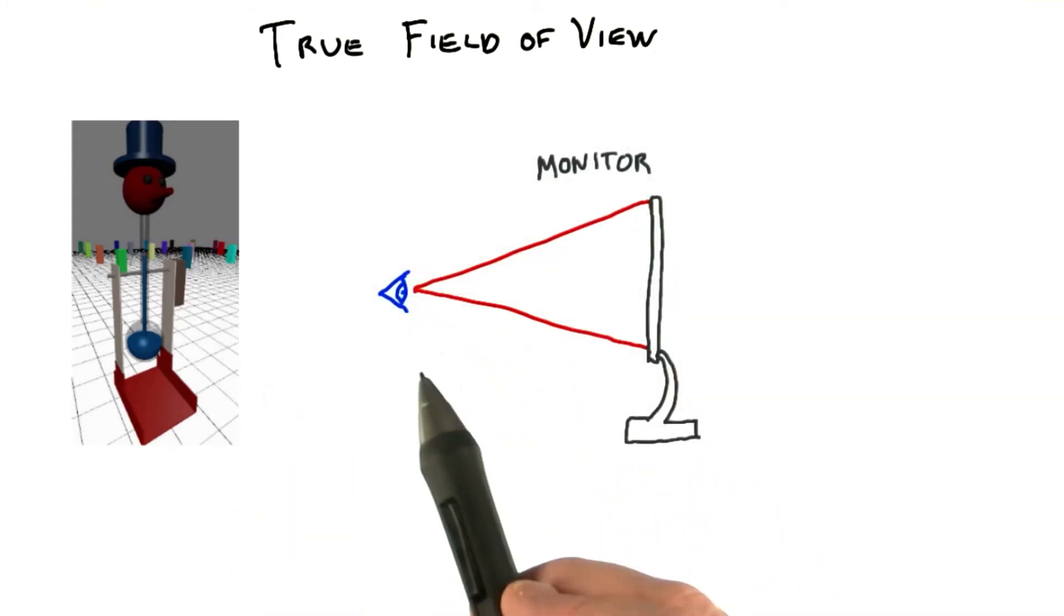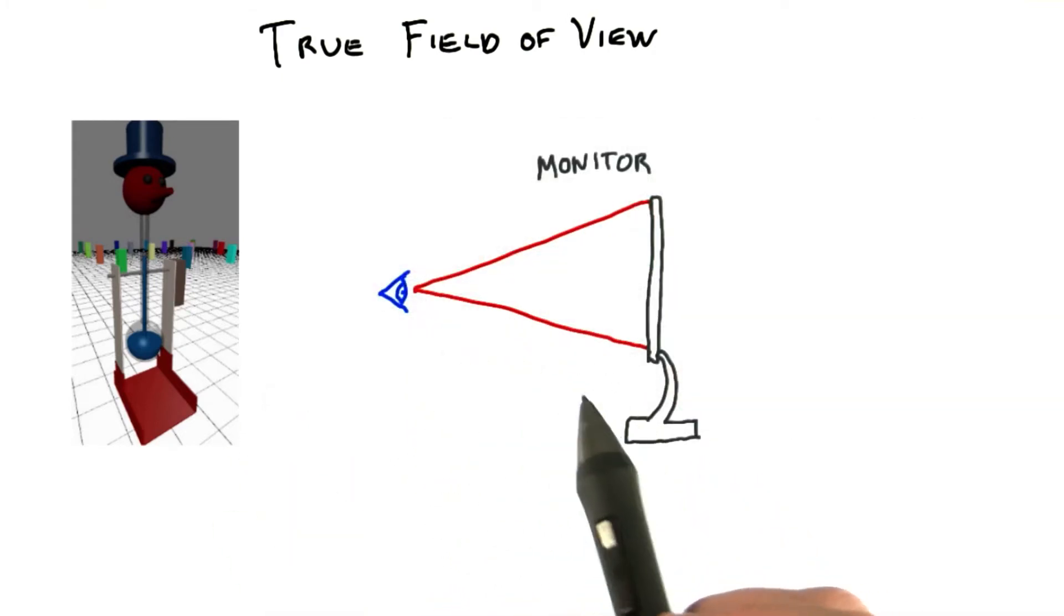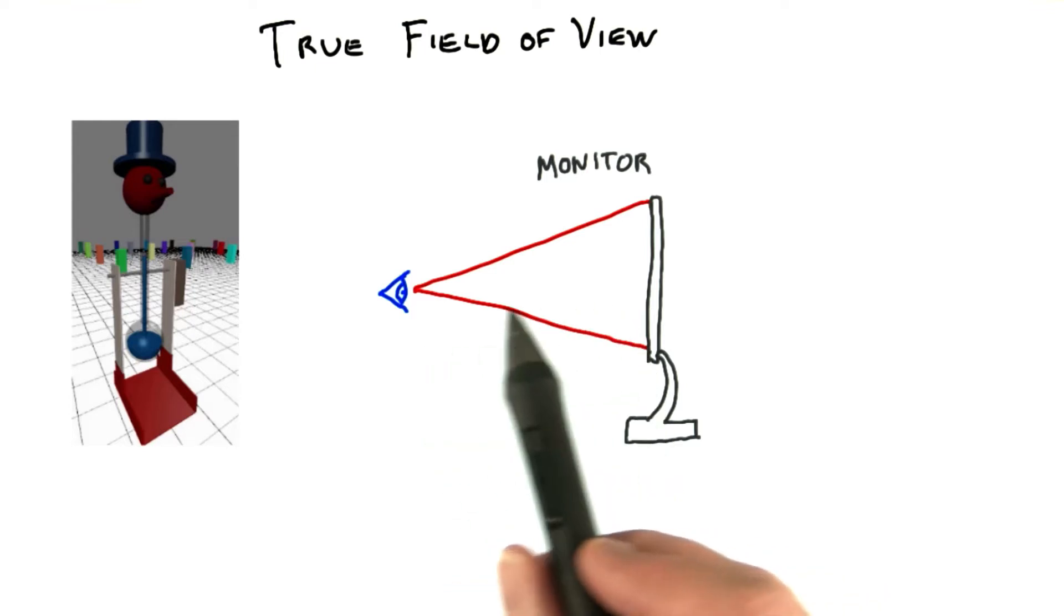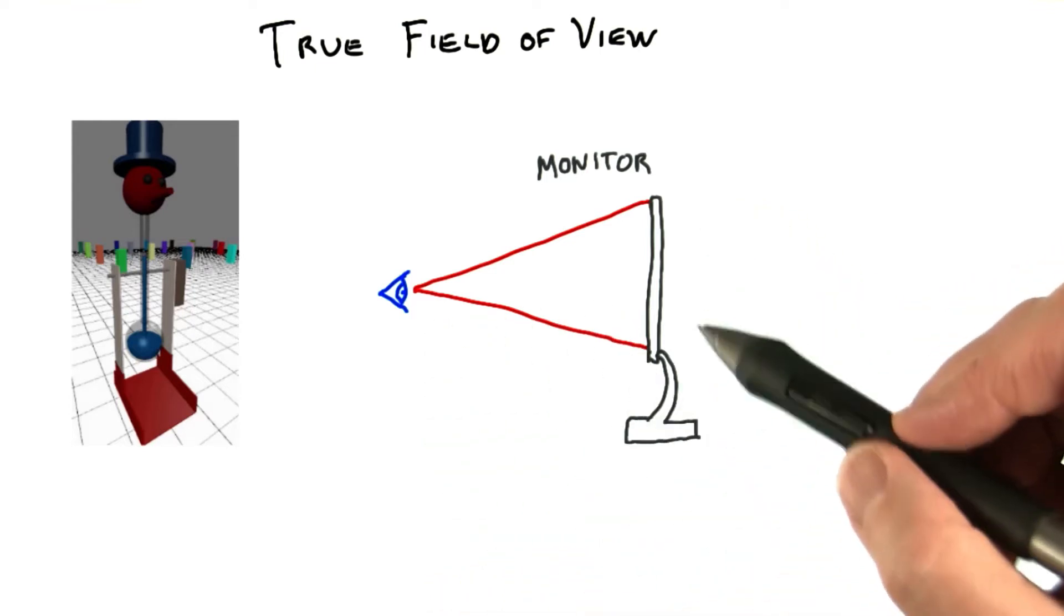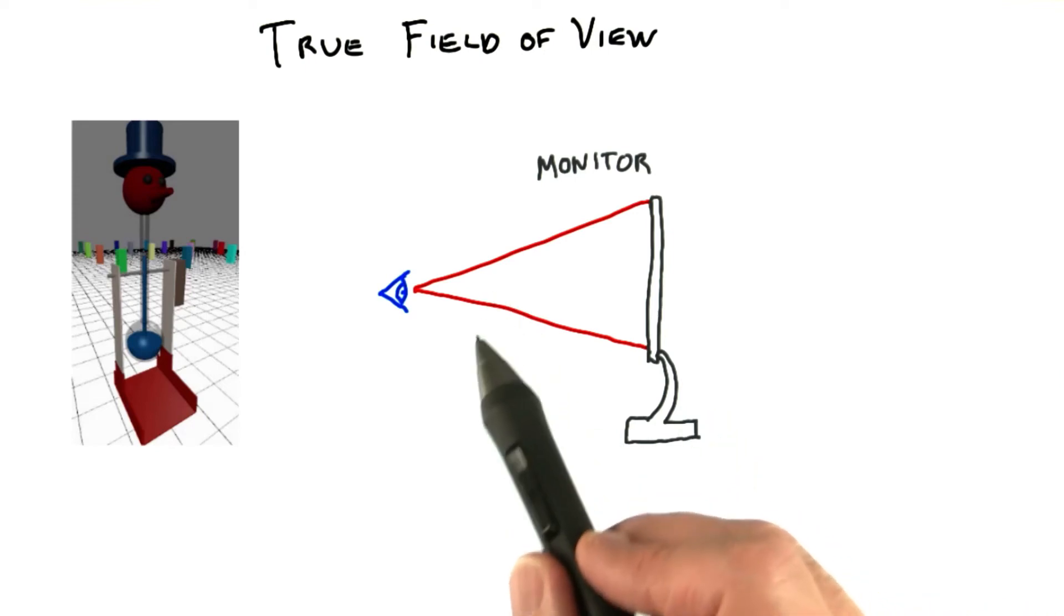Think of what the field of view represents. When you look at your monitor, tablet, or mobile device, you're a given distance away from it. The screen itself is a certain height. This forms a real world field of view angle.